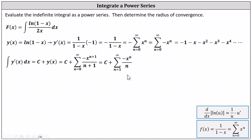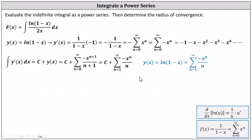Now that we have the indefinite integral for y(x), we need to recognize that in our case c is equal to 0. Therefore y(x), which equals the natural log of the quantity 1 minus x, equals the power series: the sum from n equals 1 to infinity of the opposite of x to the power of n divided by n.